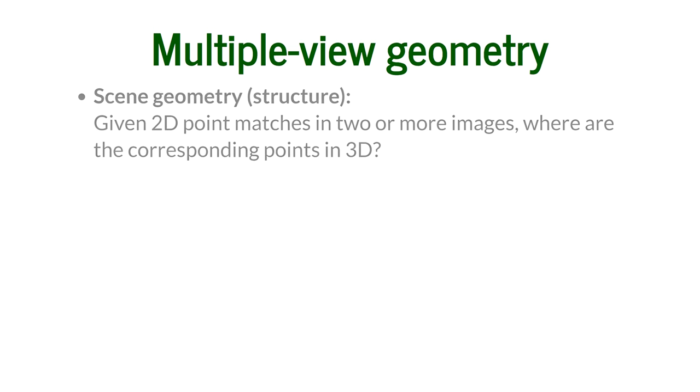In order to get 3D structure out of 2D images, our software needs to answer three questions of multiple view geometry. The first question is scene geometry — the structure. We have 2D point matches in two or more images, usually more, and we need to know where the corresponding points are in 3D.